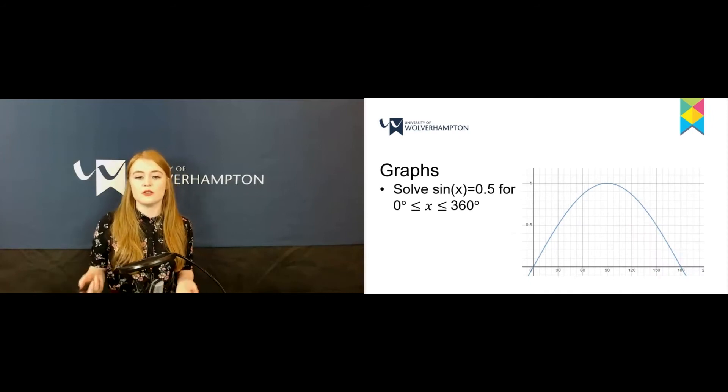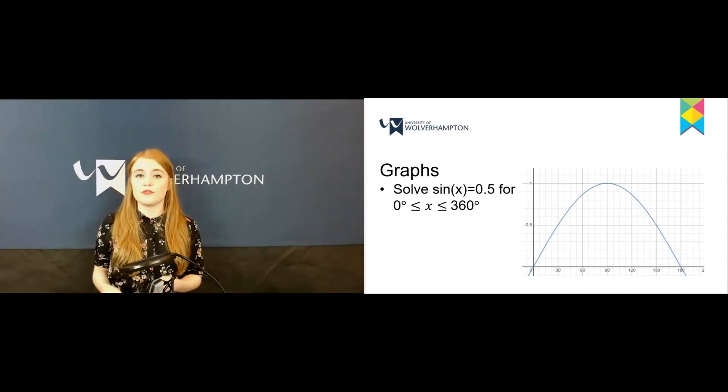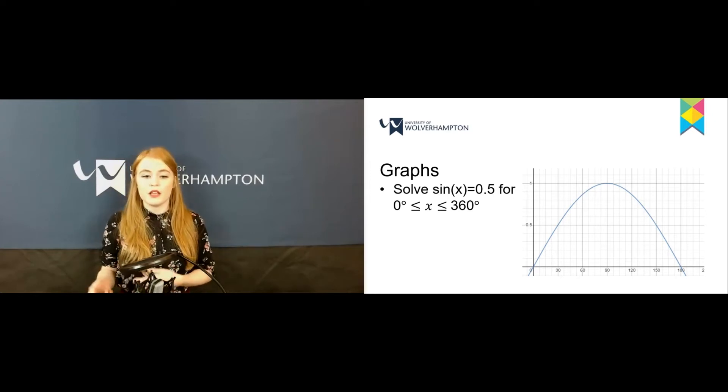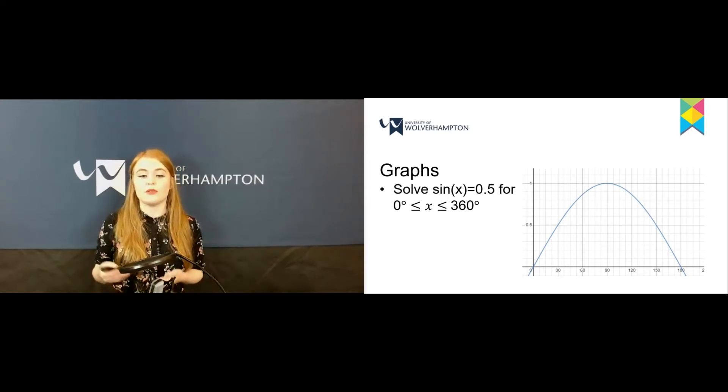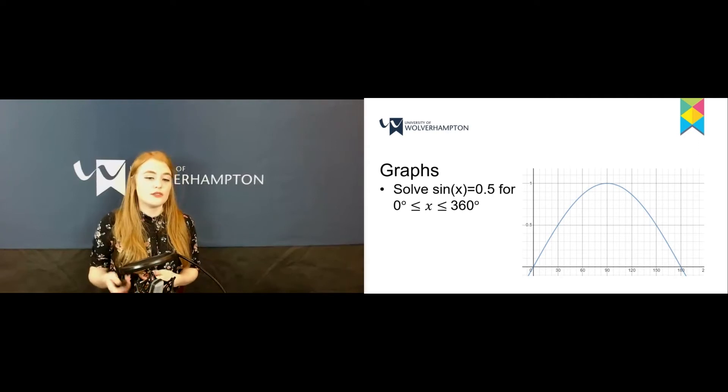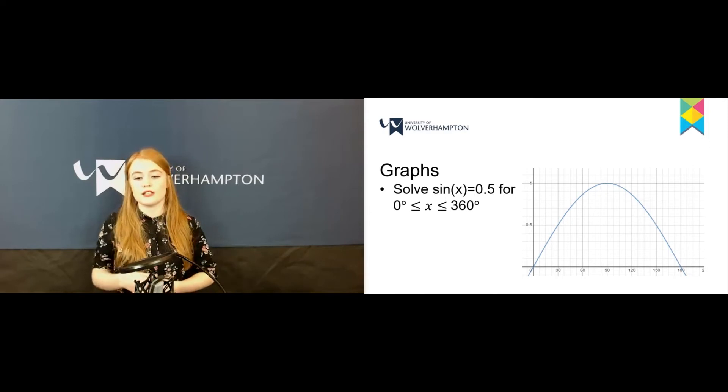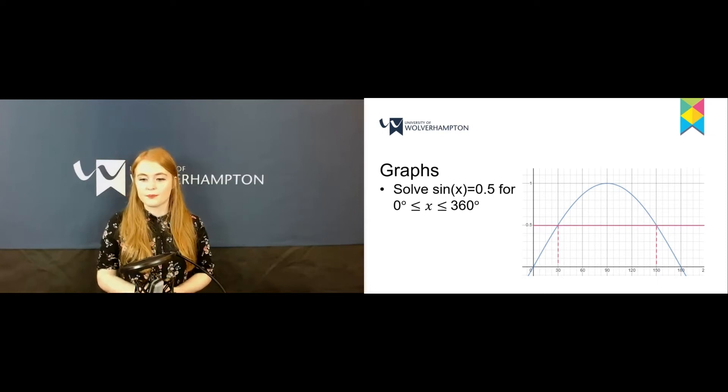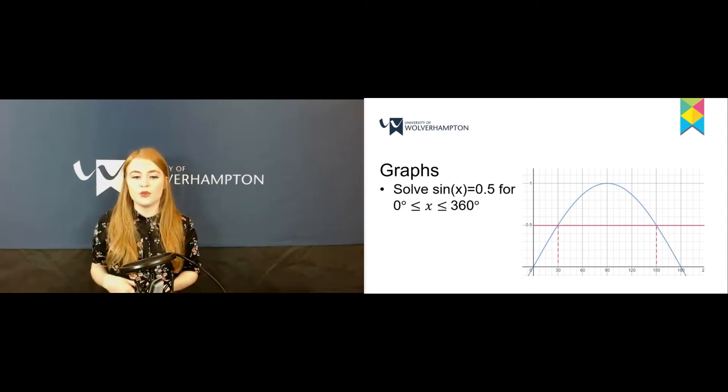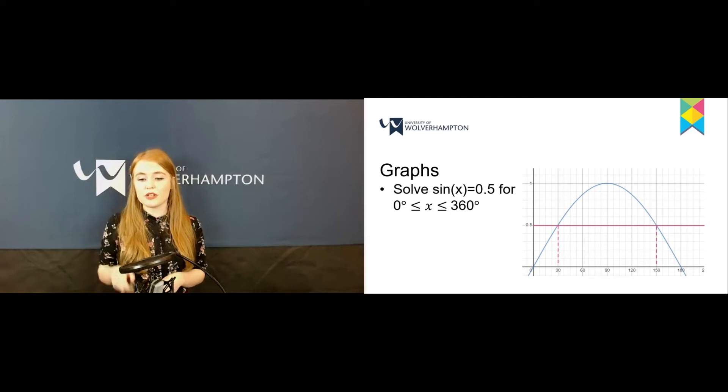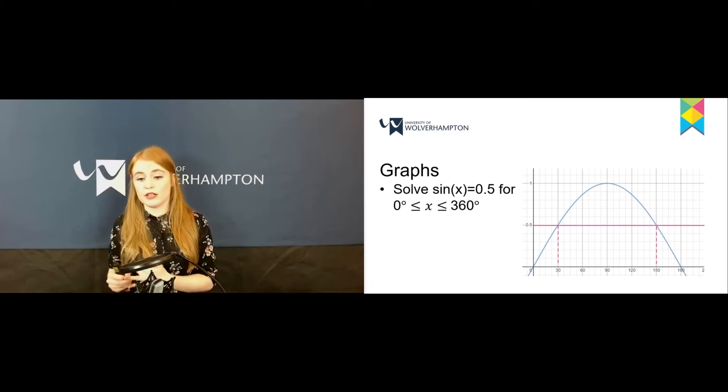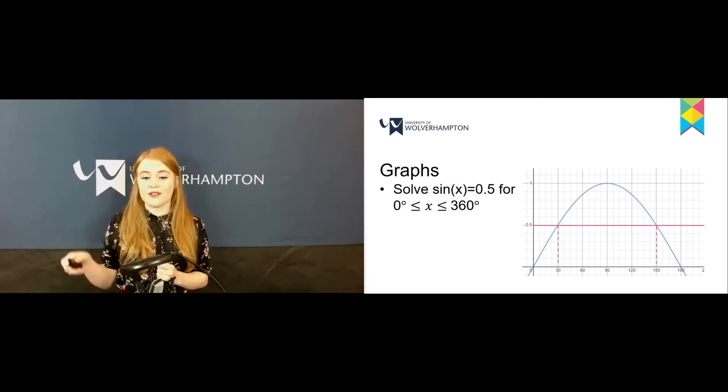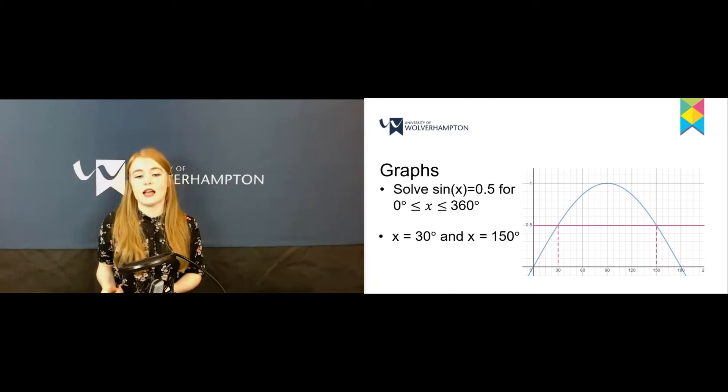How do we use graphs? We can use graphs for solving if we didn't want to use SOHCAHTOA. If we had sin(x) = 0.5 and wanted to figure out what x was for all angles between 0 and 360 degrees, let's look at this graph. Here's the line for 0.5. If we draw down, we can see that at 30 degrees and 150 degrees the sine graph is at 0.5. That's our answer.